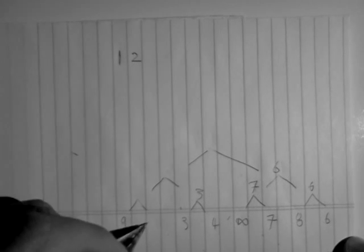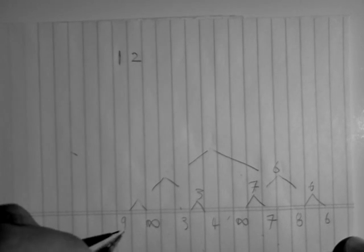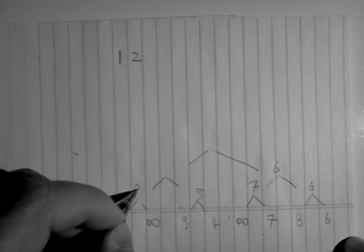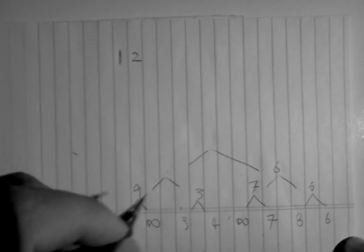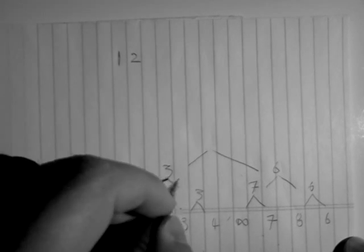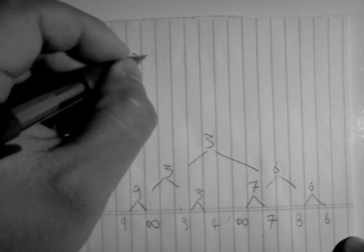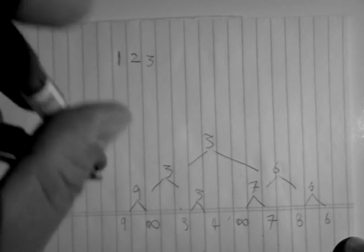2 is being replaced by infinity. Between 9 and infinity, 9 is smaller. Between 3 and 9, 3 is smaller. Between 3 and 6, 3 is smaller. So 3 is being popped out this time.